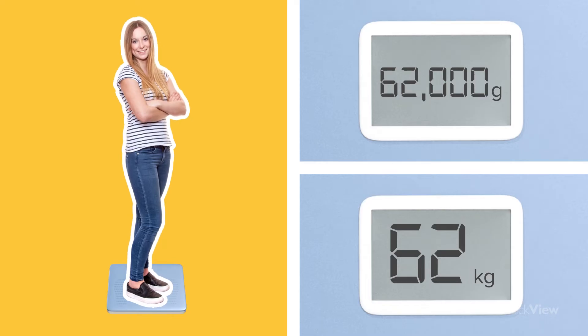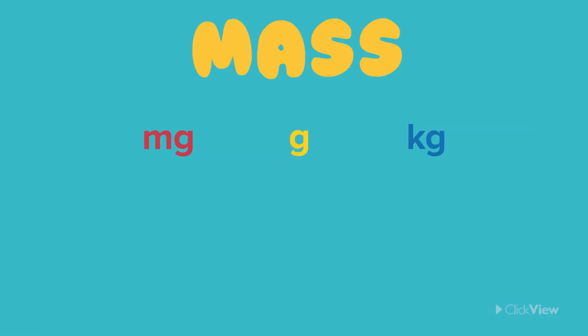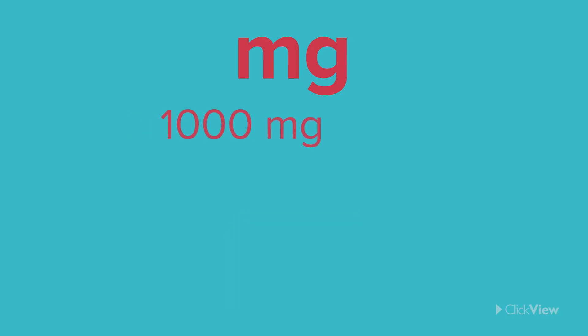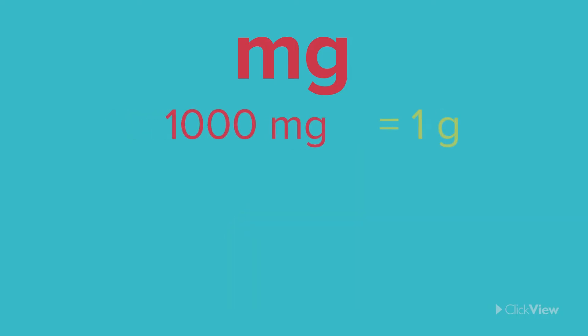Let's see how this conversion works. The smallest unit we use to measure mass is the milligram. This isn't used very often unless something is incredibly small. One thousand milligrams equals one gram.